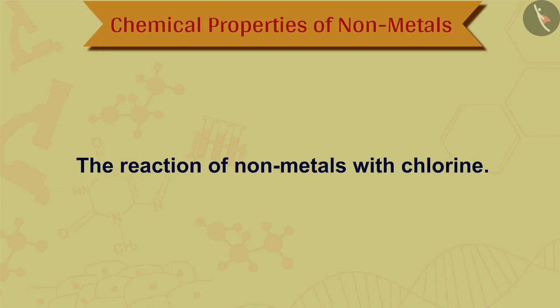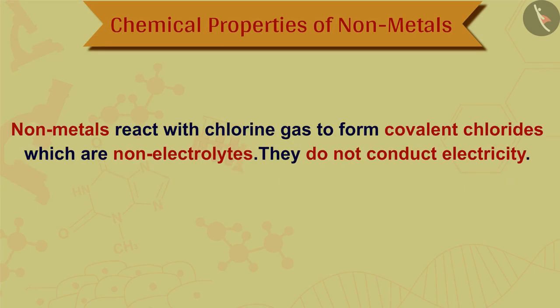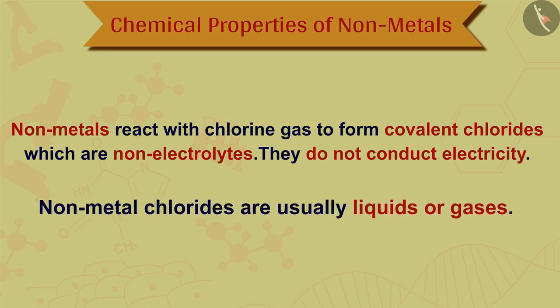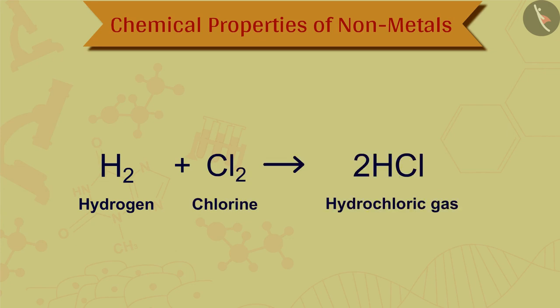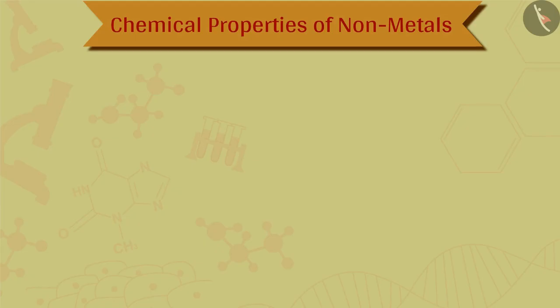The next reaction is the reaction of nonmetals with chlorine. Nonmetals react with chlorine gas to form covalent chlorides, which are non-electrolytes and do not conduct electricity. Nonmetal chlorides are usually liquids or gases. For example, hydrogen reacts with chlorine to form hydrochloric gas.